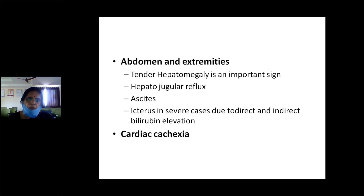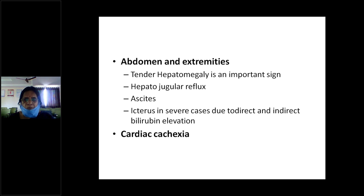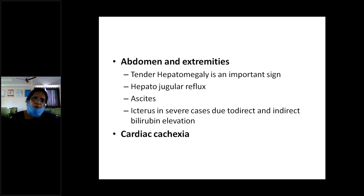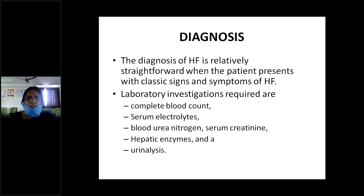Ascites may be present as a transudate accumulation. Jaundice can occur if there is an increase in direct or indirect bilirubin levels in severe heart failure. In the last stage, cardiac cachexia can occur over a period of two to three years of congestive cardiac failure. These are all the manifestation symptoms and signs of heart failure.